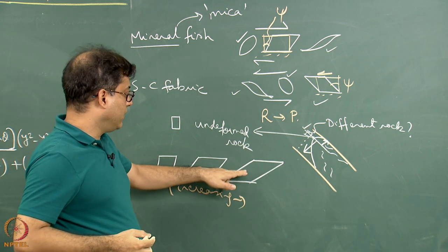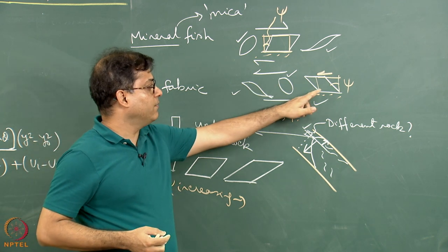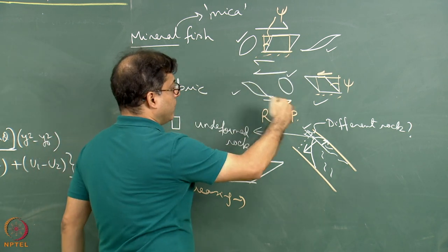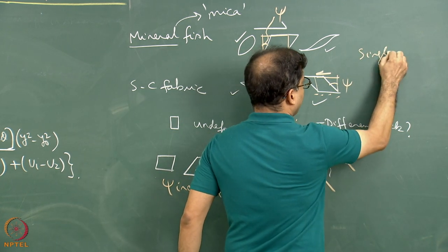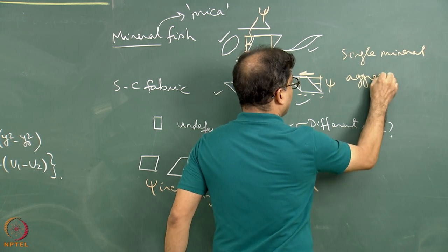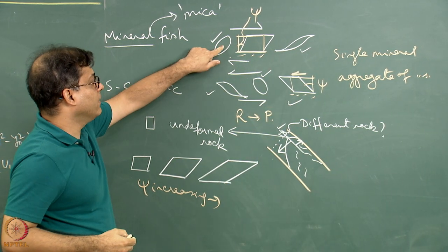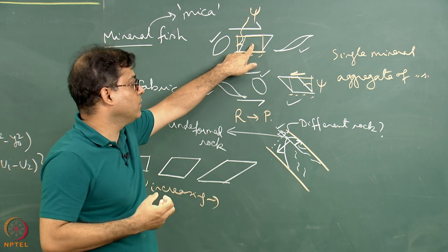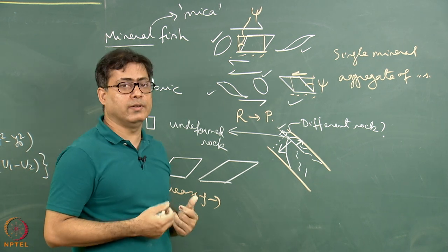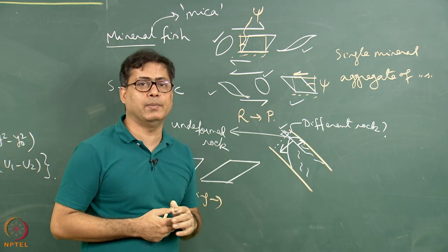For strain analysis purposes, when we pick up parallelogram geometry, we have to ensure that single mineral grains are defining these parallelogram geometries. Bear in mind that such geometries can also be manifested either by a single mineral or an aggregate of minerals. If it is an aggregate giving lenticular, parallelogram, or sigmoid geometry, then it will be more difficult to use. So it is not that we simply pick up a sample, make a thin section, and start working with the parallelogram geometry — things will not be so simple.